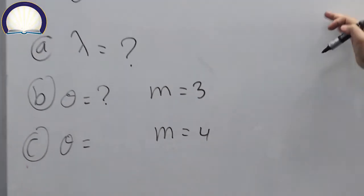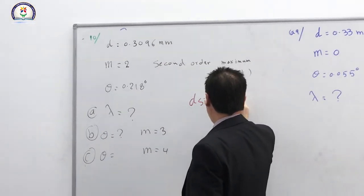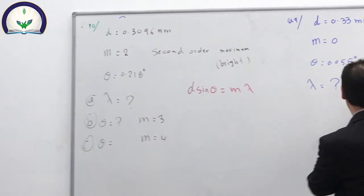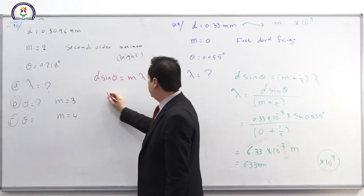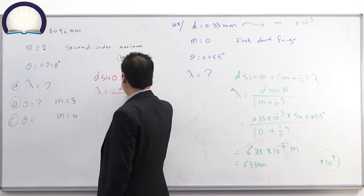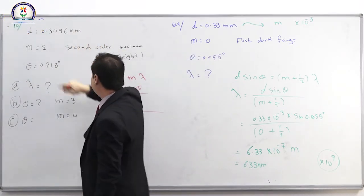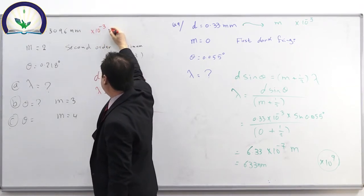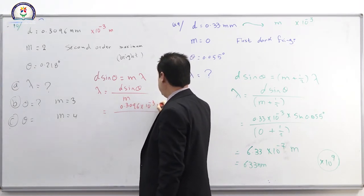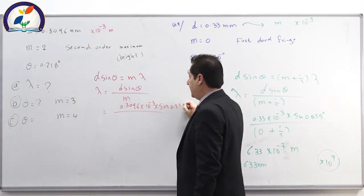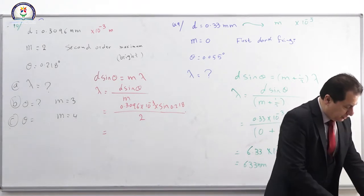For part (a), since it is a bright fringe, use d·sinθ = mλ. Rearranging: λ = d·sinθ / m. Convert D to meters. So λ = (0.3096 × 10⁻³) × sin(0.218°) / 2.